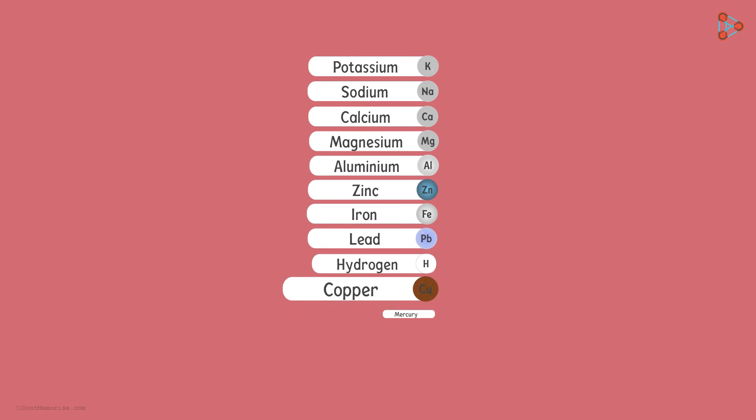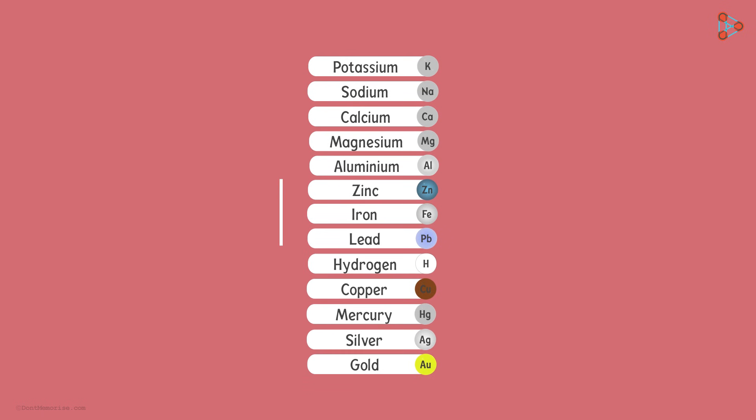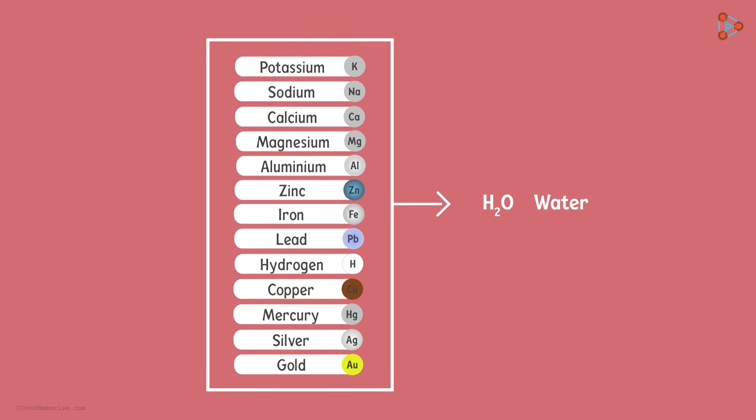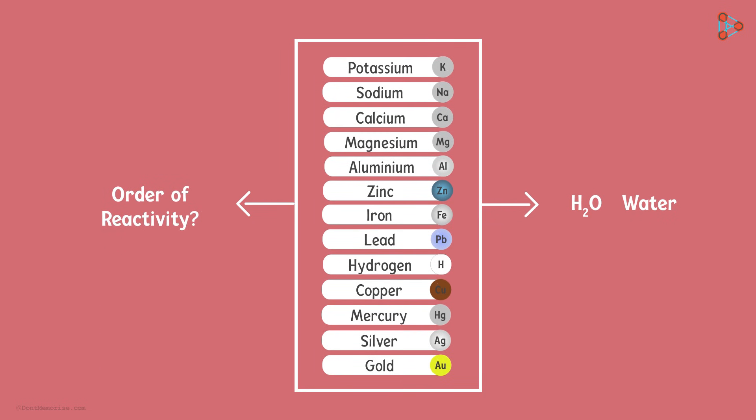We take the same sample of metals to check out how they react with water. Don't forget our basic aim, to find out the order of reactivity of these metals. If a metal reacts more vigorously with water, then it is said to be more reactive than the one that doesn't react as much.